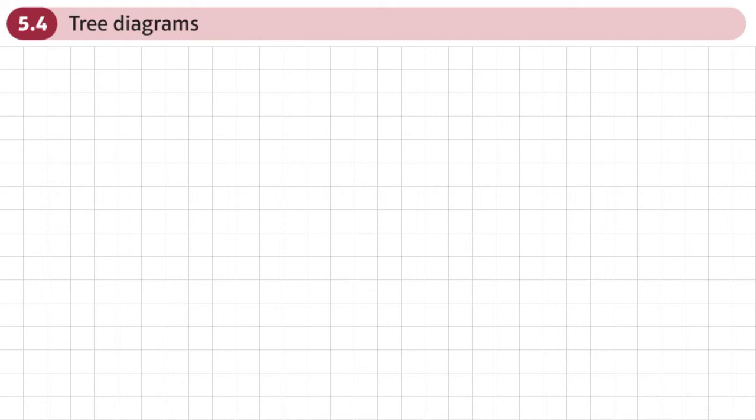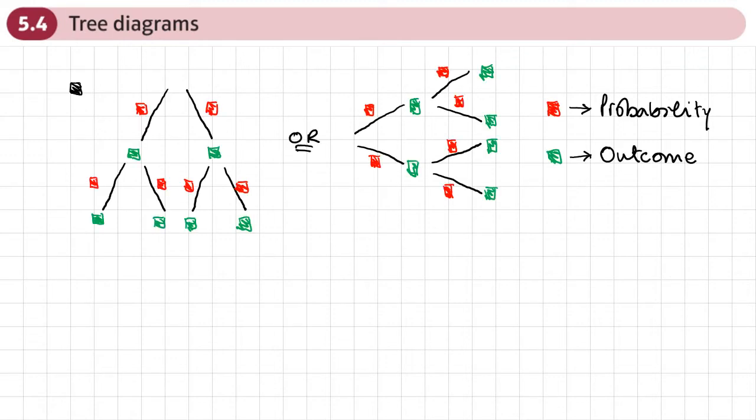This is the fourth and final section of chapter 5 on probability and this section is about tree diagrams. So just a quick reminder about tree diagrams, they can be drawn going downwards or they can be drawn going across.